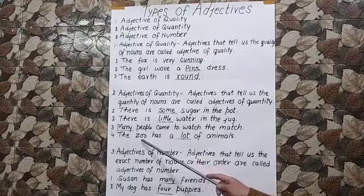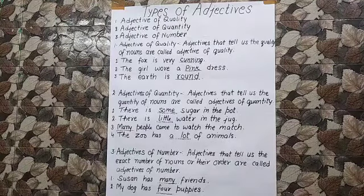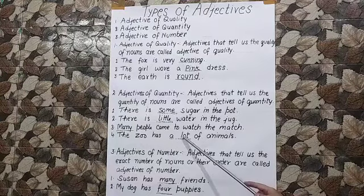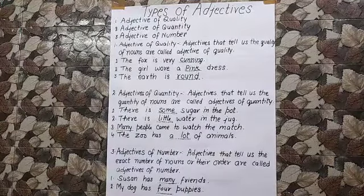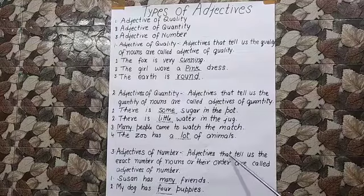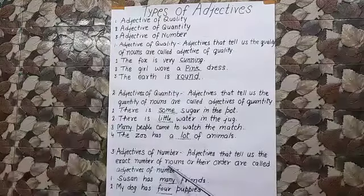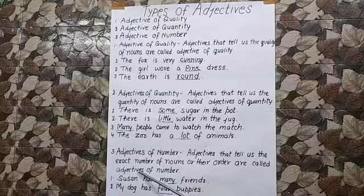The zoo has a lot of animals. Since we cannot count the number of animals in the zoo, lot is an adjective of quantity in this sentence. Now children, let us study about adjectives of number. Adjectives that tell us the exact number of nouns or their order are called adjectives of number.